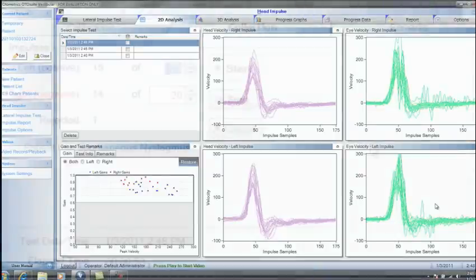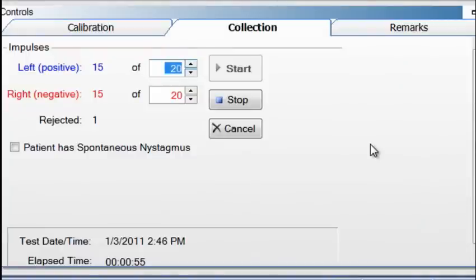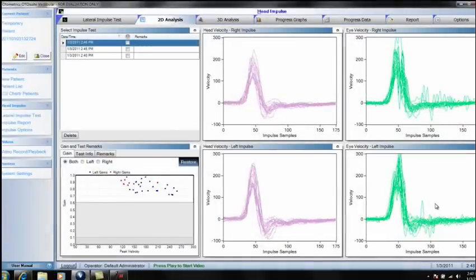We want to make one more comment regarding data collection. The analysis algorithm evaluates the good head impulses and ensures that the patient was performing the task appropriately. For example, if the tester performs a good head impulse, then the data is saved. But if the patient happened to blink or is looking around during the good head impulse, the analysis algorithm then discards the data as not being valid.